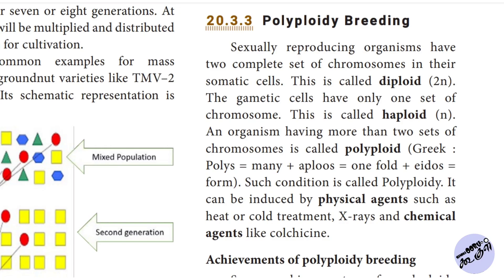The gametic cells have only one set of chromosomes. This is called haploid. An organism having more than two sets of chromosomes is called polyploid.